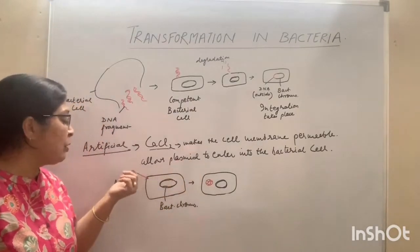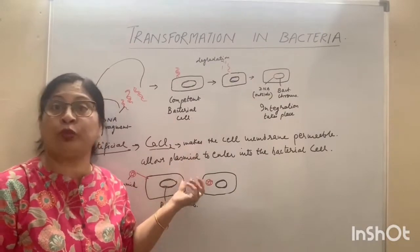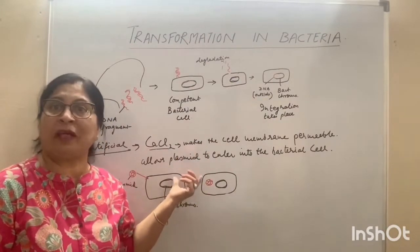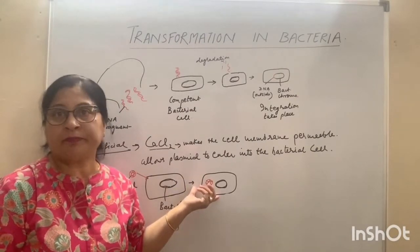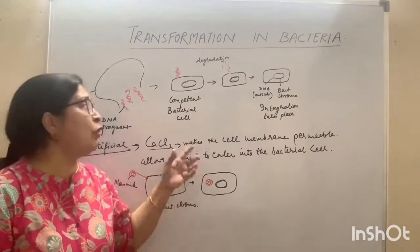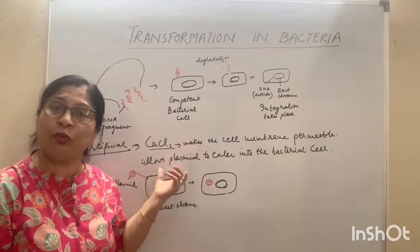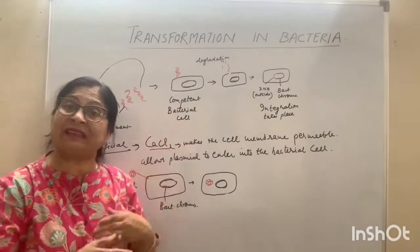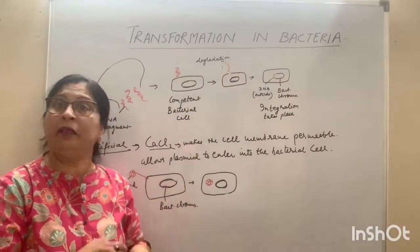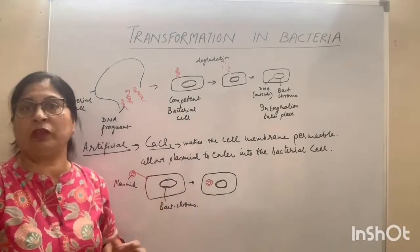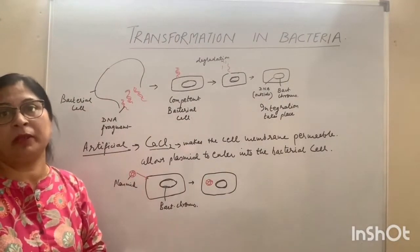Plasmid, being circular DNA, has more chances to enter the bacterial cell. Linear DNA has less chance because exonucleases present in the bacterial cell rapidly degrade linear DNA, so chances will be less. This is all about transformation in bacteria.